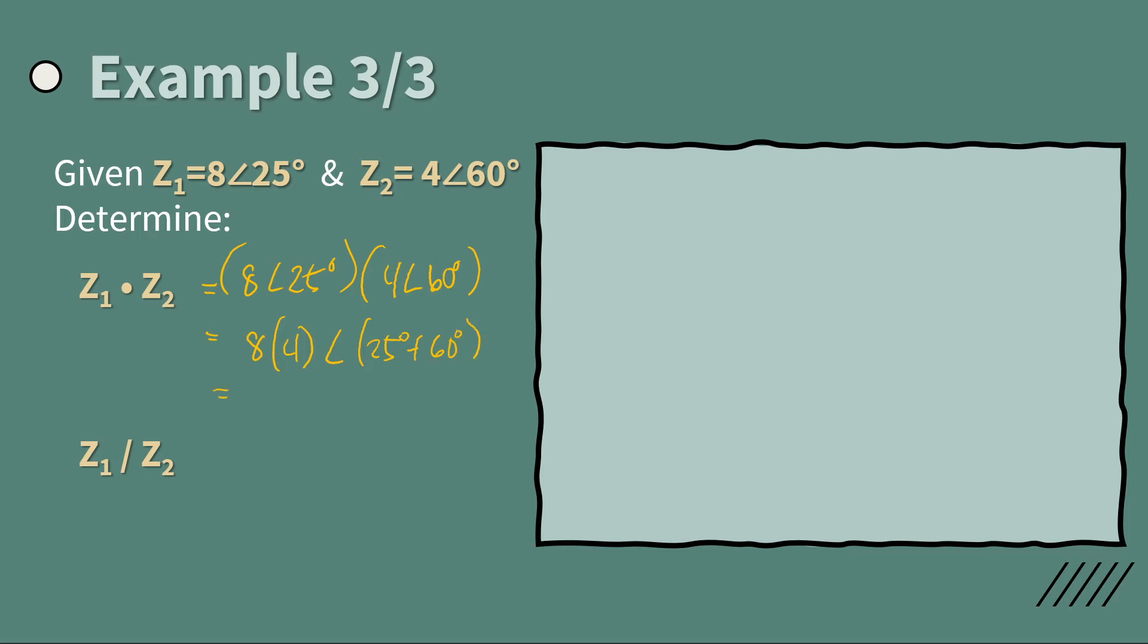So we have 8 times 4, 32. Angle 25 plus 60, so this is 85 degrees. So that's it. So we have the product. Very simple.